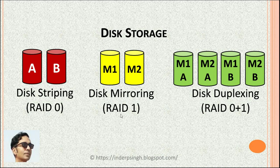In Disk Mirroring or RAID 1, data is stored simultaneously on multiple disks — Mirror 1 and Mirror 2. Because the data is mirrored or duplicated across multiple disks, even if one of the disks fails, the data can still be retrieved from another mirrored disk.